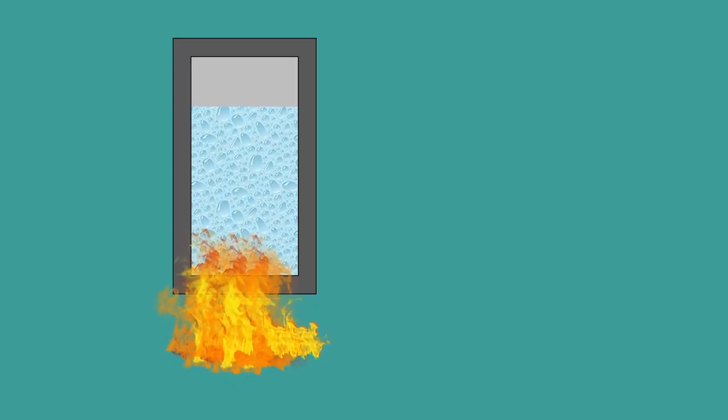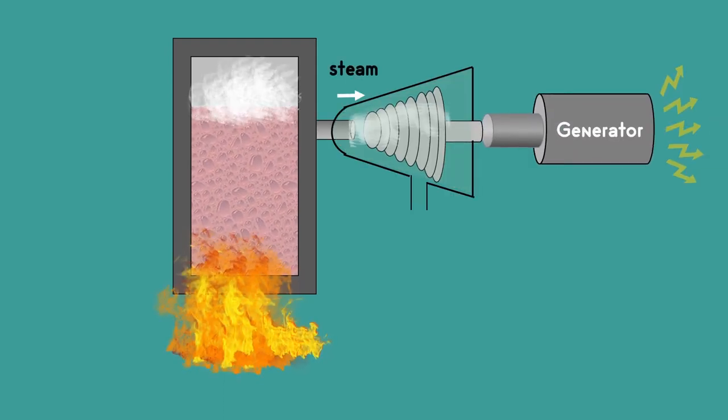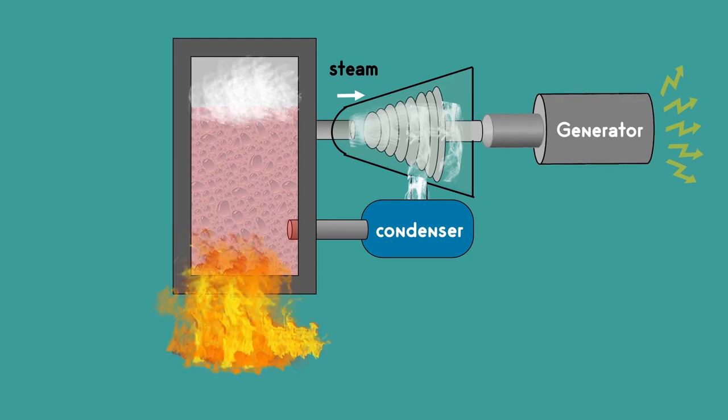Here the heat energy is used to boil water which creates steam. The steam is given as the input to the steam turbine which is coupled to a generator which generates electricity. The exhaust steam from the turbine is taken to a condenser where it is cooled and condensed back to water and is reused.